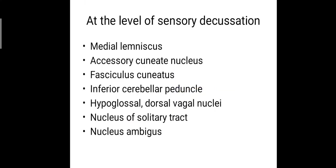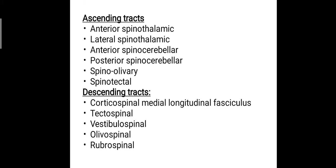The second section is at the level of sensory decussation, where we have the medial lemniscus, accessory cuneate nucleus, fasciculus cuneatus, inferior cerebellar peduncle, the hypoglossal and dorsal vagal nuclei, the nucleus of the solitary tract, and the nucleus ambiguus. The ascending tracts include the anterior spinothalamic, lateral spinothalamic, anterior spinocerebellar, posterior spinocerebellar, spinoolivary, and spinotectal tracts. The descending tracts are the corticospinal, medial longitudinal fasciculus, tectospinal, vestibulospinal, olivospinal, and rubrospinal tracts.